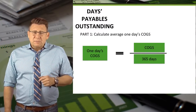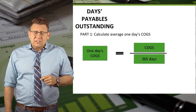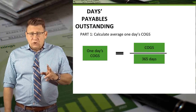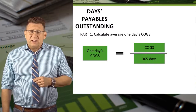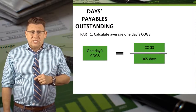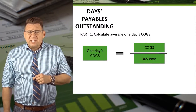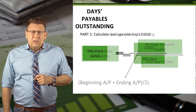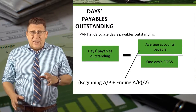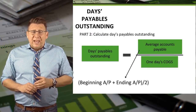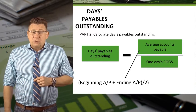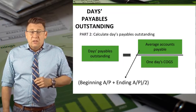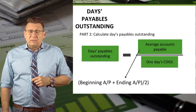The formula to calculate days payable outstanding has two parts. The first part is cost of goods sold divided by 365 days if you're calculating this using annual data. This gives us the average one day's cost of goods sold. The second part is taking average accounts payable and dividing it by the average one day's cost of goods sold calculated in part one. This gives us the days payable outstanding.